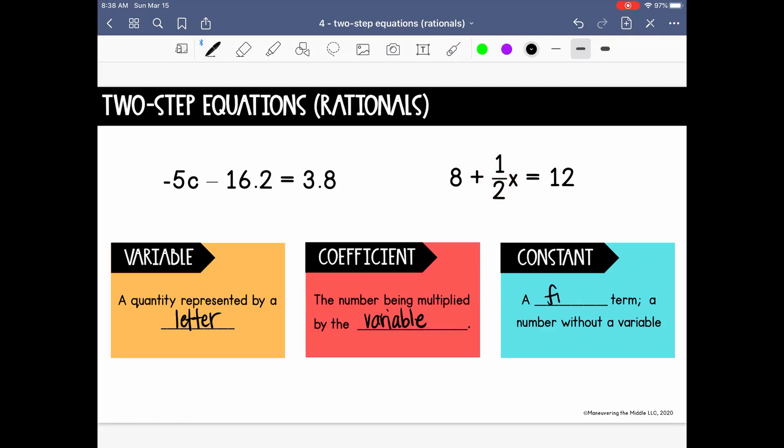A constant is a fixed term, which means that it doesn't change, and it is also a term without a variable. So the constant in the first equation is 16 and 2 tenths. In the second equation, the constant is 8.